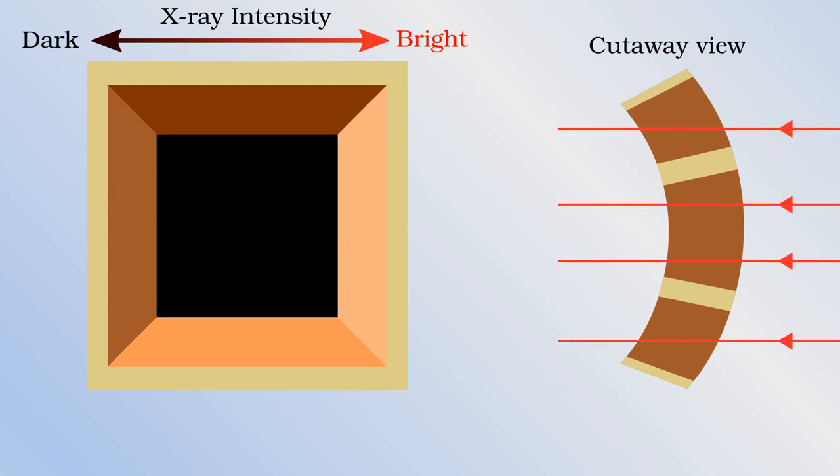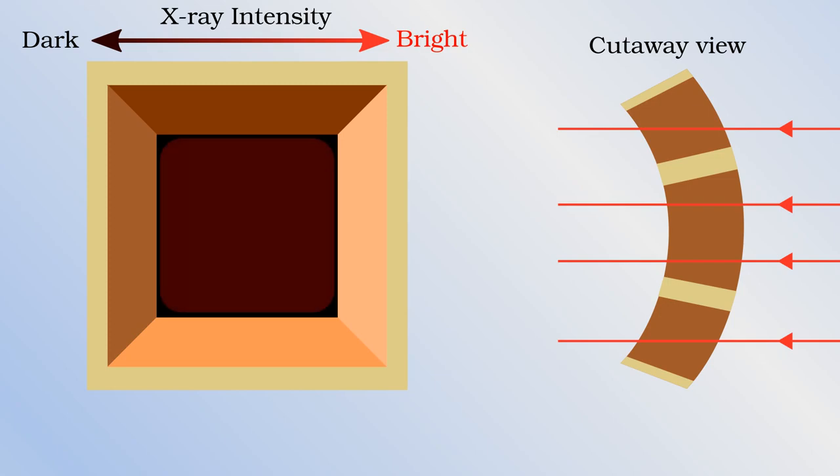Some photons pass straight through the grid of microchannels without being reflected or focused in any way. When impacting the detector, these straight-through rays are spread out uniformly, and as a result, they are not very intense.